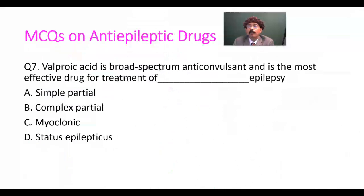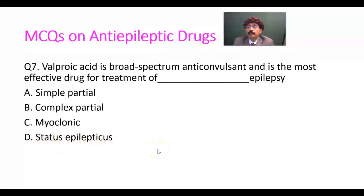Question number seven: valproic acid is a broad-spectrum anticonvulsant and is the most effective drug for the treatment of what type of epilepsy? Simple partial, complex partial, myoclonic, or status epilepticus? The answer should be myoclonic. Number seven, answer is C — myoclonic.